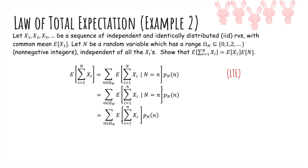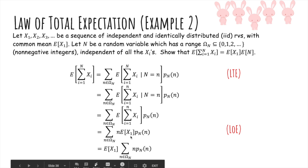We can finally use linearity of expectation as usual to get n times the expected value of X_1. We'll bring the expected value of X_1 outside, and we get n times p_N(n), and we know that to be the expected value of N.